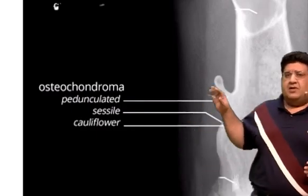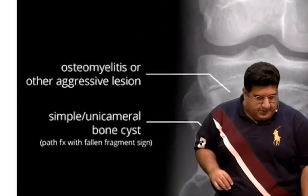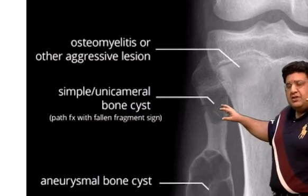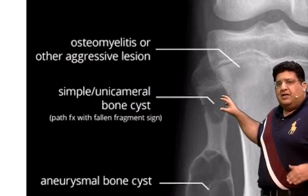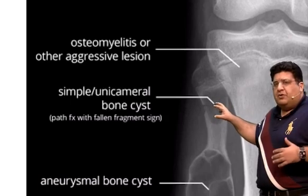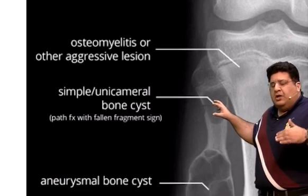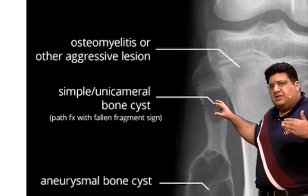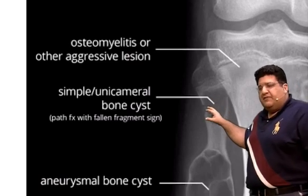The third case is a simple bone cyst — a solitary bone cyst, also called a unicameral bone cyst. Usually seen in skeletally immature people, boys more than girls. Although here they have shown proximal fibula, the most common bone is proximal humerus. It usually remains asymptomatic, but the most common complication and clinical presentation is pathological fracture. It is a well-defined cystic lesion with a fluid-filled cavity.